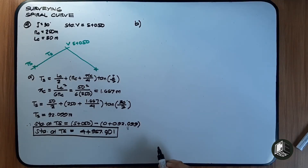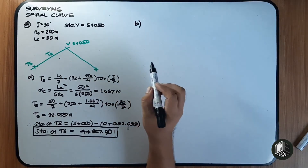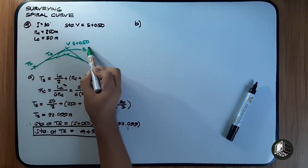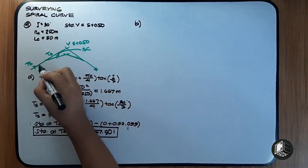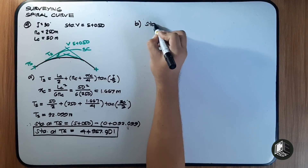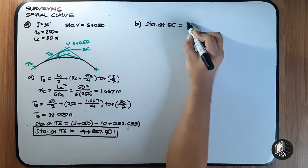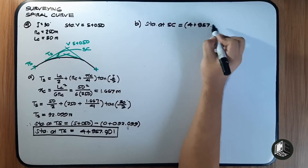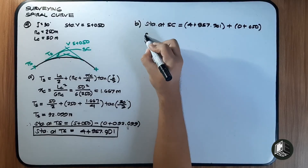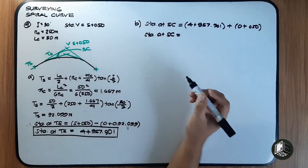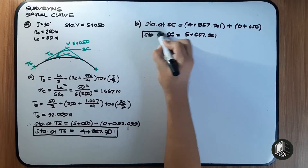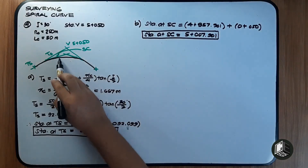For letter B, find the stationing of the start of the central curve, which is the station at SC. We add LC to the station at TS: station at SC equals station of TS, 4,957.901, plus LC which is 50. Therefore station at SC equals 5,007.901. This is the station where our circular curve starts.